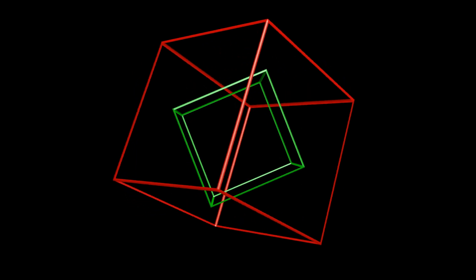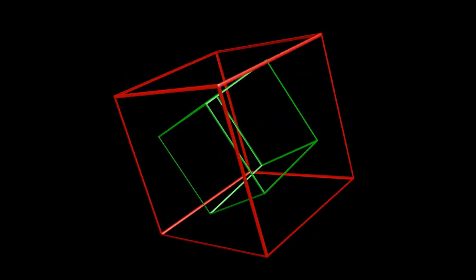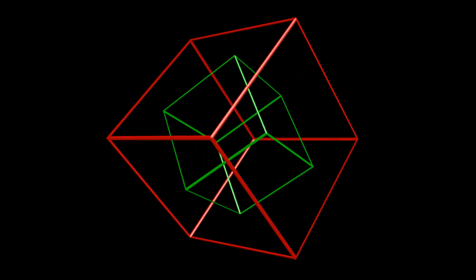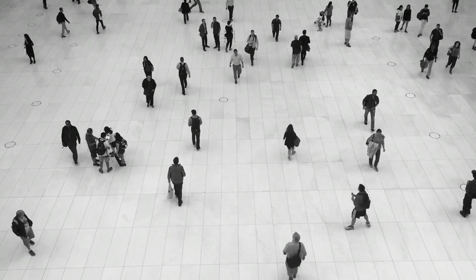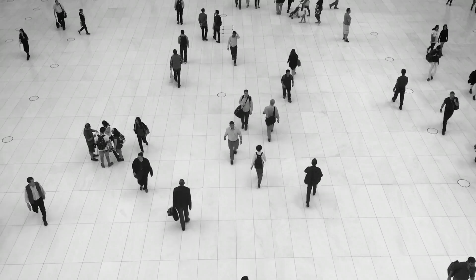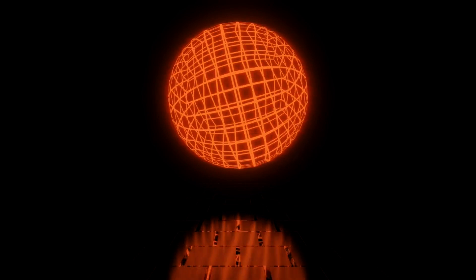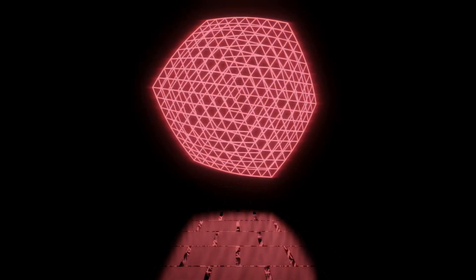If a four-dimensional object passed through our 3D world, we would only perceive a series of 3D cross-sections of that object. This is because our 2D retinas can only capture 2D projections, limiting our ability to fully comprehend the 4D shape. Because of this, we will see 4D objects in 3D limitations. As 4D objects move in 4D dimensions, we may see 4D objects as 3D objects changing shape or appearing or disappearing suddenly.